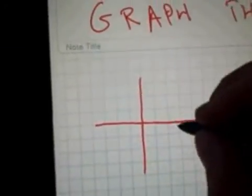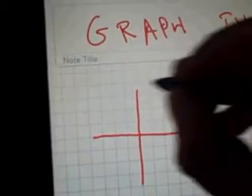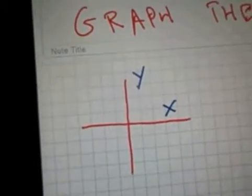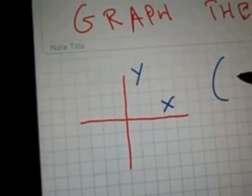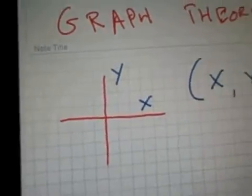Graph theory is represented by an x and y axis. Let's get a different color there. We got x here and y here. X is the horizontal and y is the vertical.